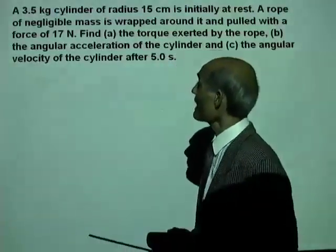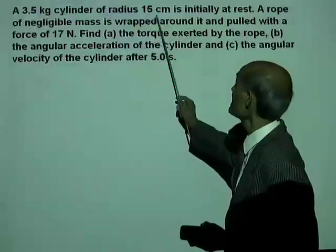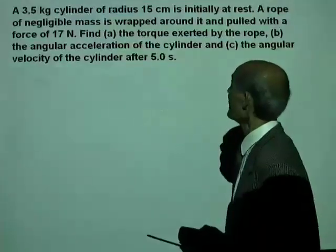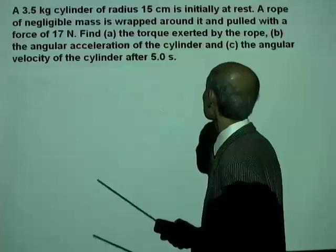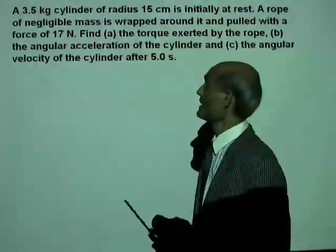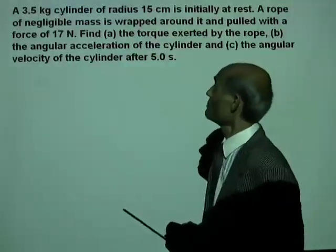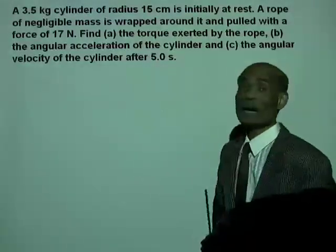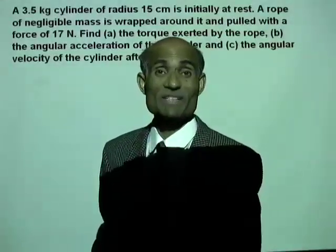A 3.5 kg cylinder of radius 15 cm is initially at rest. A rope of negligible mass is wrapped around it and pulled with a force of 17 N. Find: A) the torque exerted by the rope, B) the angular acceleration of the cylinder, and C) the angular velocity after 5 seconds.